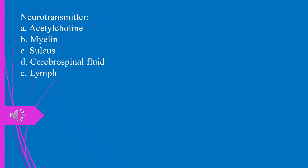Question 6. Neurotransmitter: a) acetylcholine, b) myelin, c) sulcus, d) cerebrospinal fluid, e) lymph. The answer is a, acetylcholine.